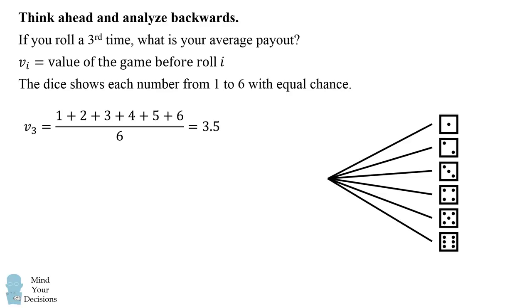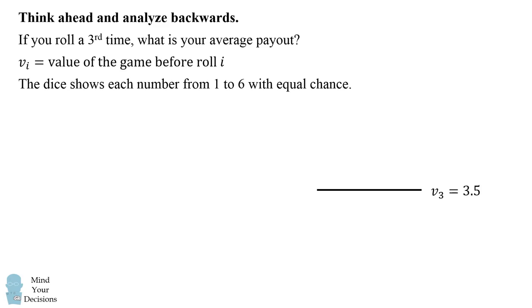So we know that if we get to the third roll, we can expect an average payout of 3.5. Therefore, we can replace this entire diagram of the third roll with just one value of the average payout of 3.5. What that allows us to do is then think backwards to the second roll.